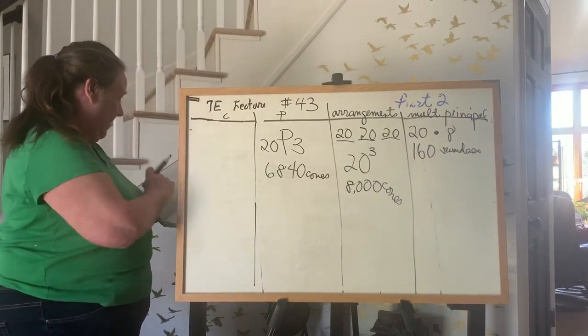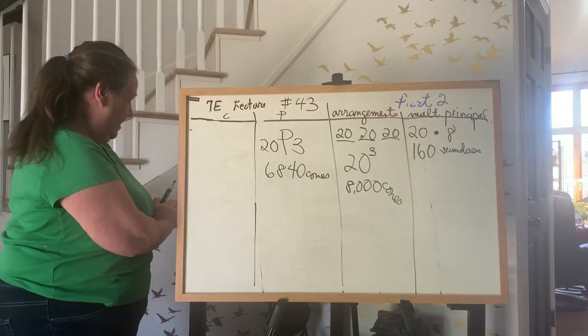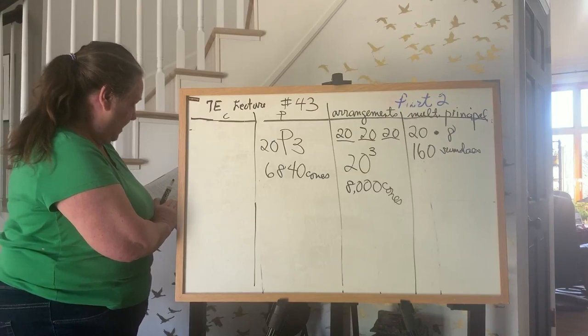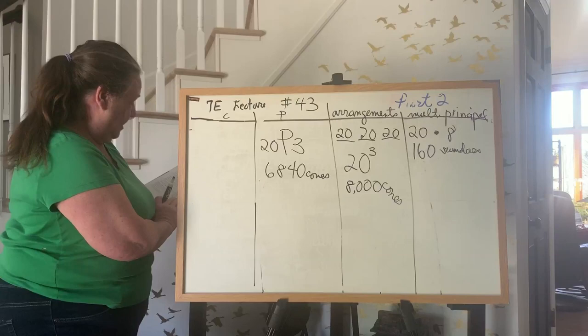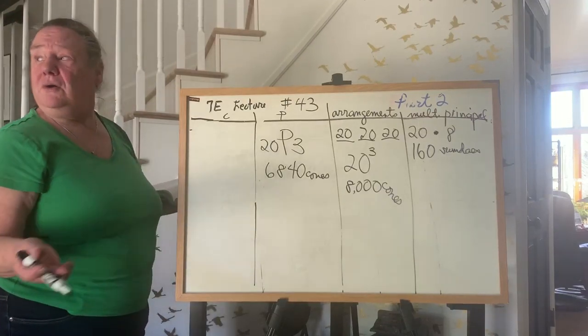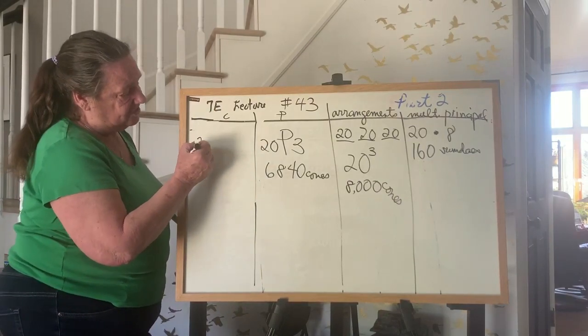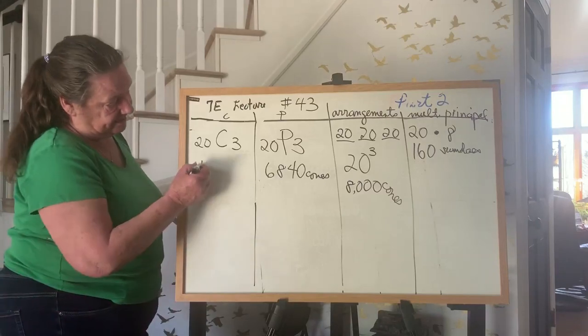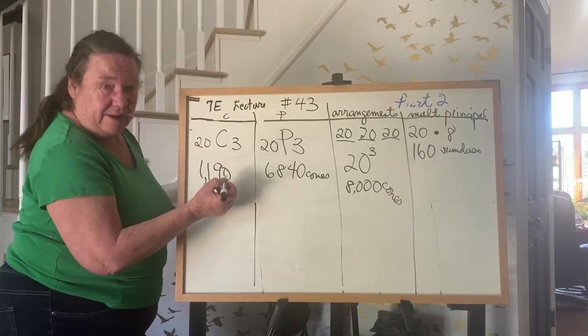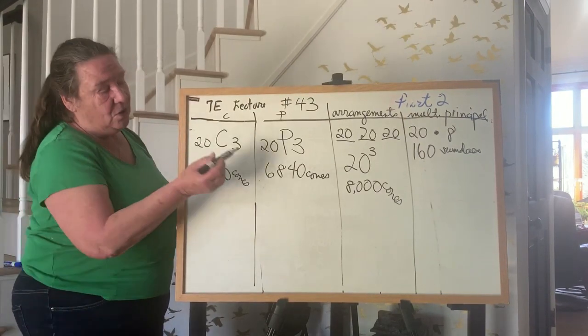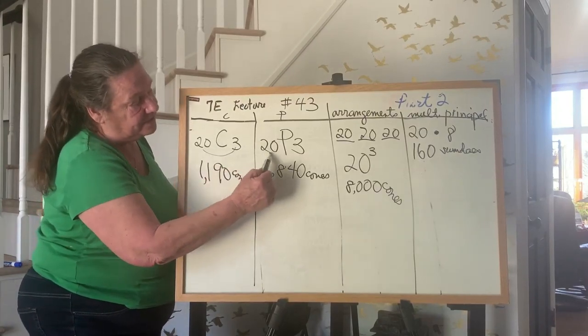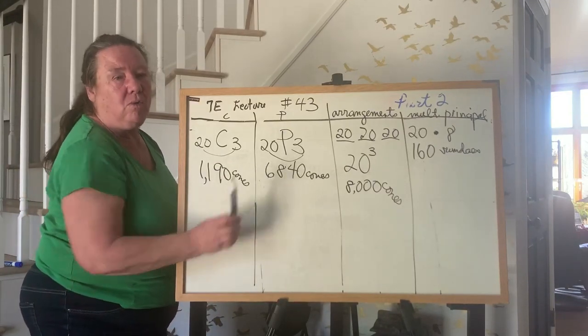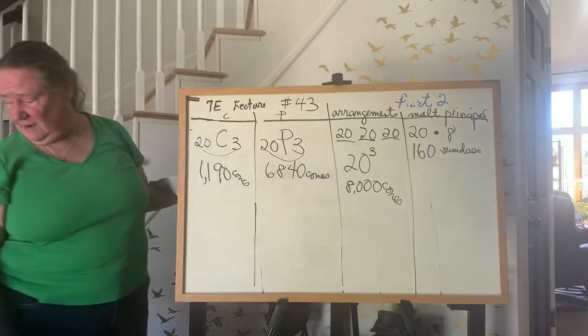The last one. The D part. Using the 20 ice creams. How many different triple cones can you have with three different flavors. Different. That limits you to P's and C's. Can you have with three different flavors. If you don't care about the order. You don't care about the order. That's got to be a C. That is 20C3. And that gives you 1,190 cones. When you do the P's and the C's. If the numbers are the same, P is always much bigger. P will always be bigger. So there's a good example of all the problems.